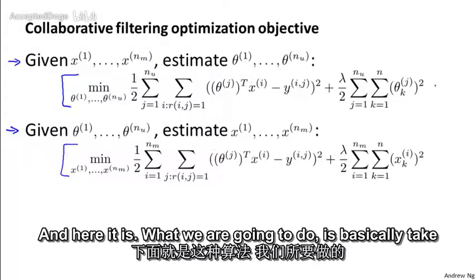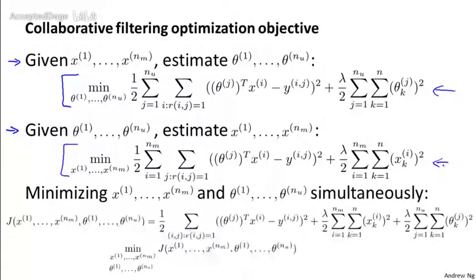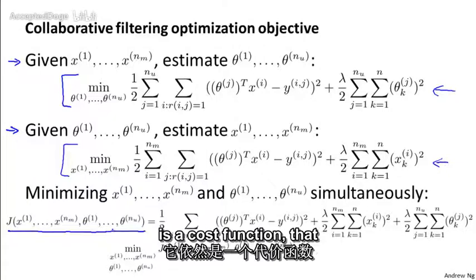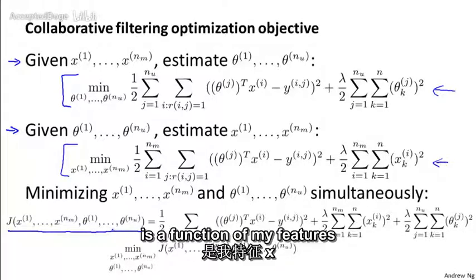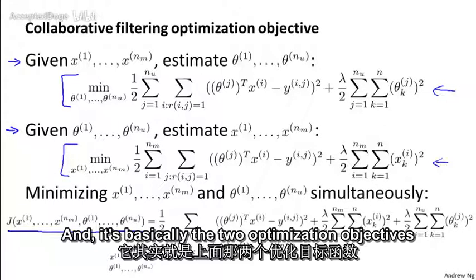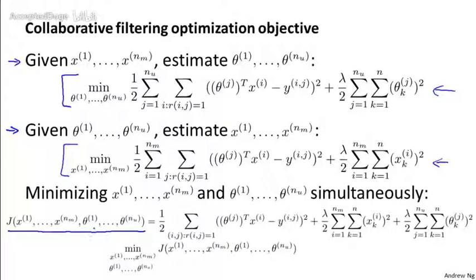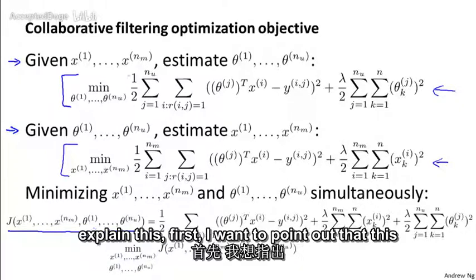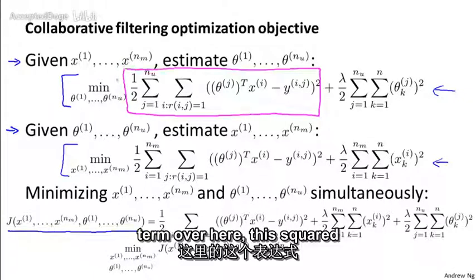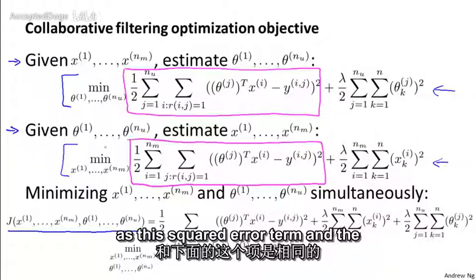What we're going to do is take both of these optimization objectives and put them into the same objective. So I'm going to define a new optimization objective J, which is a cost function — a function of my features x and a function of my parameters theta. That's basically the two optimization objectives put together. I want to point out that this squared error term here is the same as this squared error term.